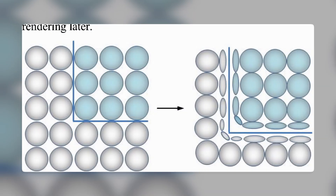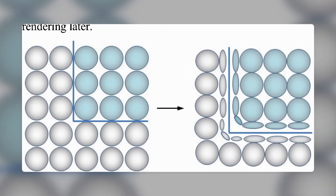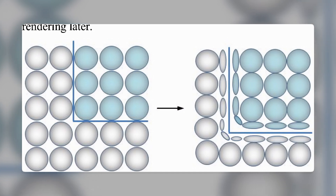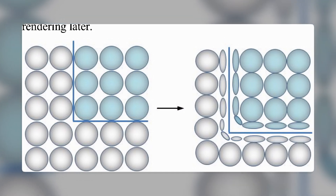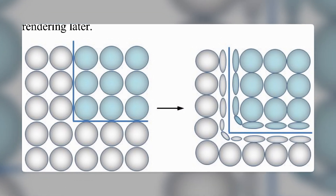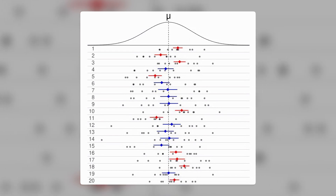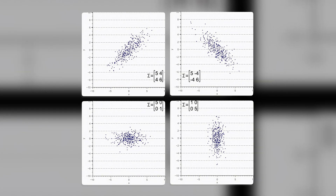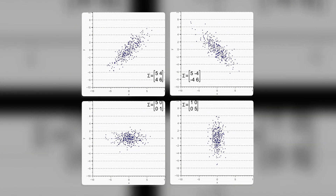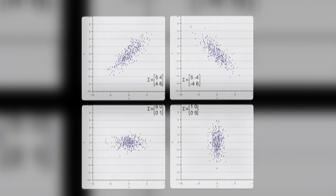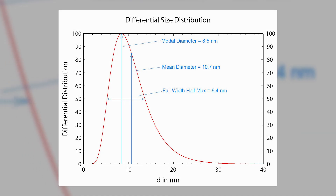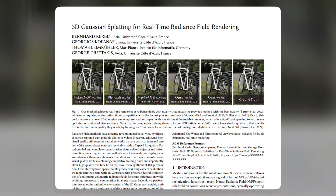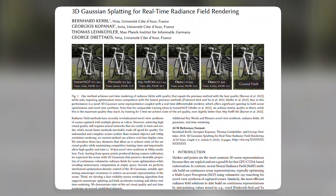A 3D Gaussian is a mathematical function that describes a probability distribution over a 3D space. It has three parameters: a mean vector that specifies the center of the distribution, a covariance matrix that specifies the shape and orientation of the distribution, and a weight that specifies the intensity of the distribution.